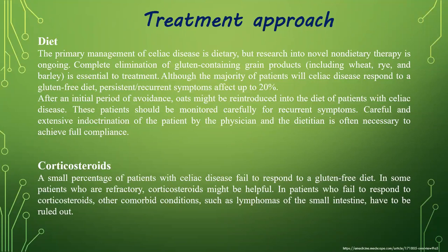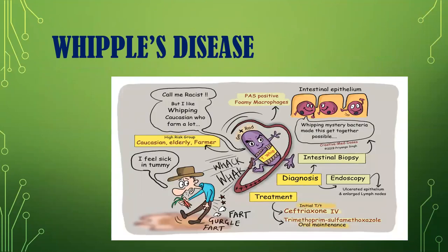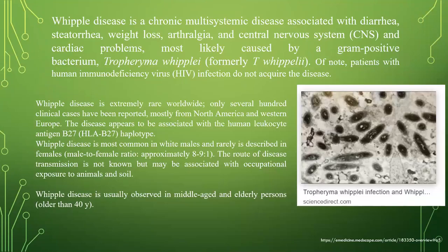Whipple disease is a chronic multisystemic disease associated with diarrhea, steatorrhea, weight loss, arthralgia, and central nervous system and cardiac problems. It is most likely caused by the gram-positive bacterium Tropheryma whipplei. Of note, patients with human immunodeficiency virus infection do not appear to acquire the disease.